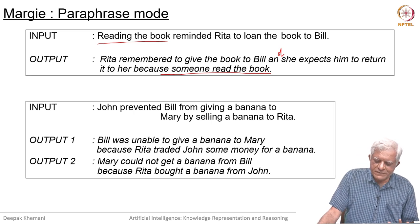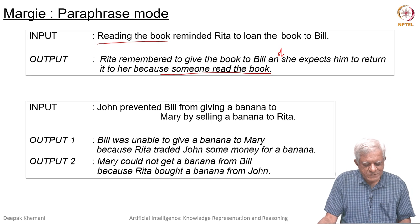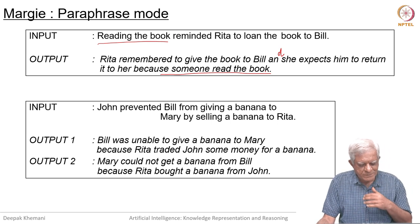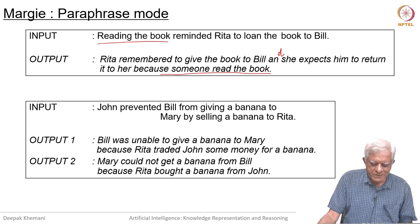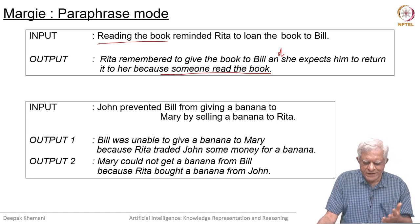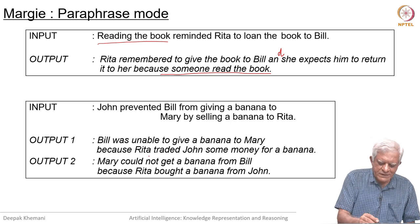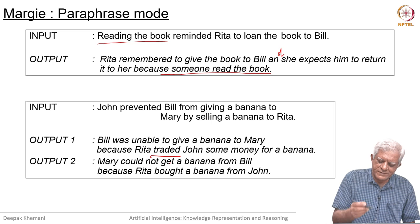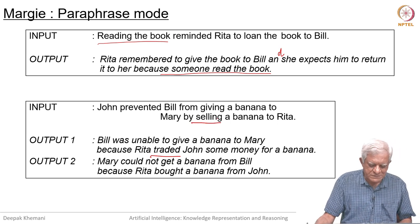John prevented Bill from giving a banana to Mary by selling a banana to Rita. Presumably there is only one banana around. Bill was unable to give a banana to Mary because Rita traded John some money for a banana. As you can see, the word 'traded' has come in again, and it is related to selling and so on.